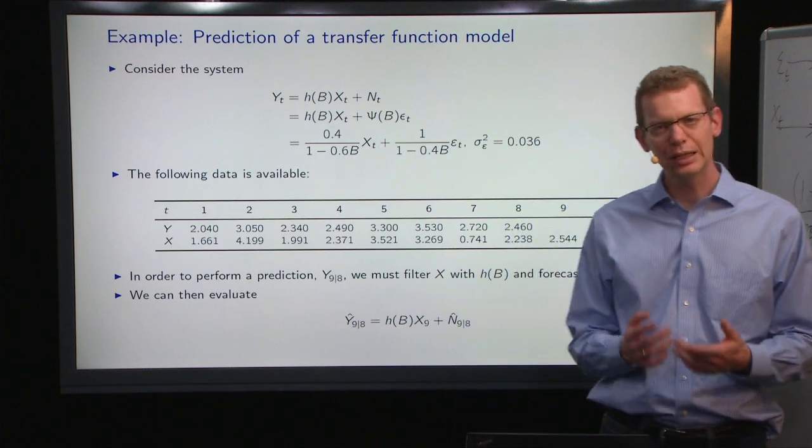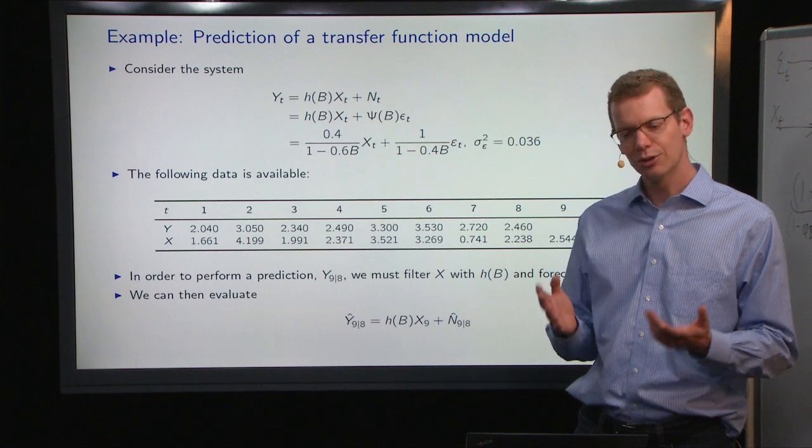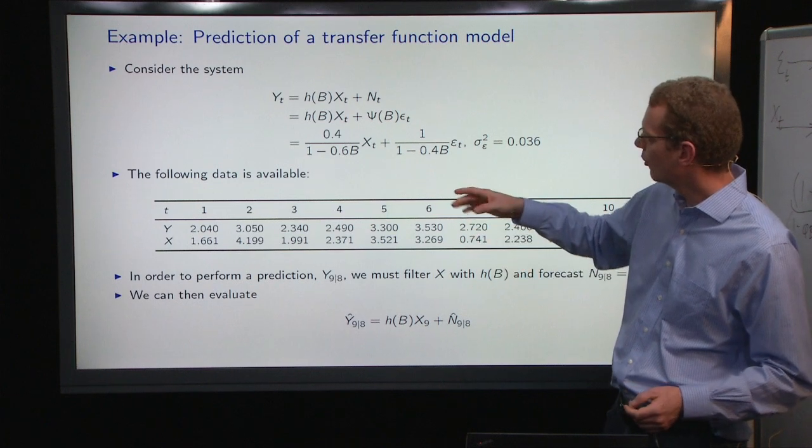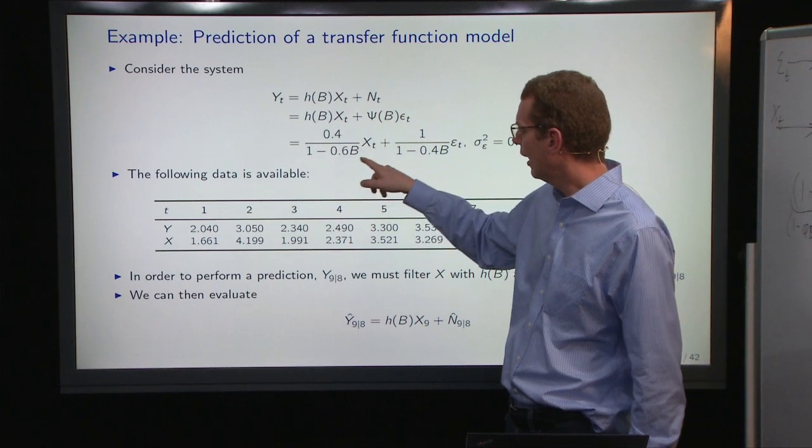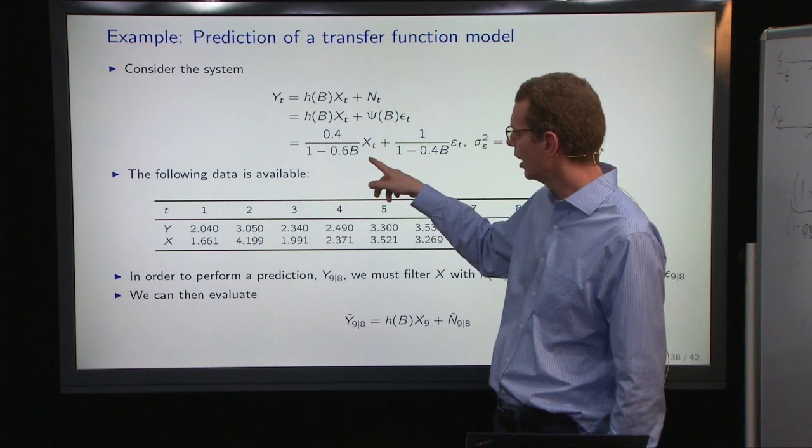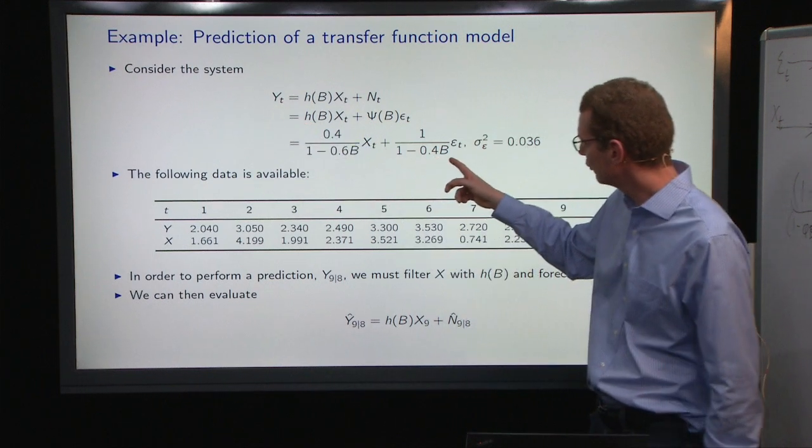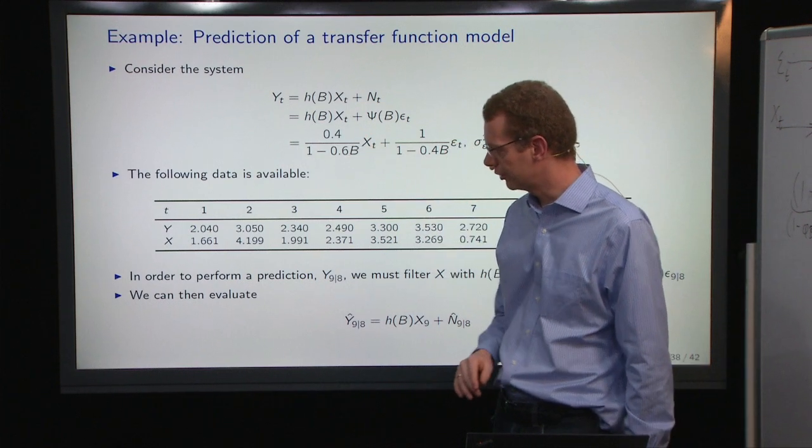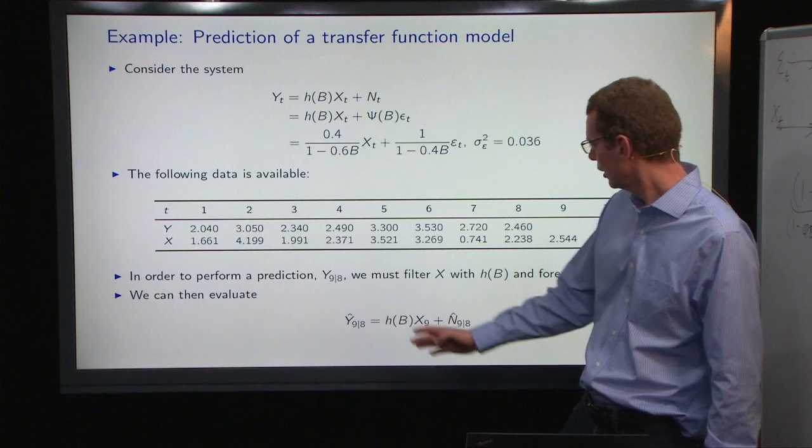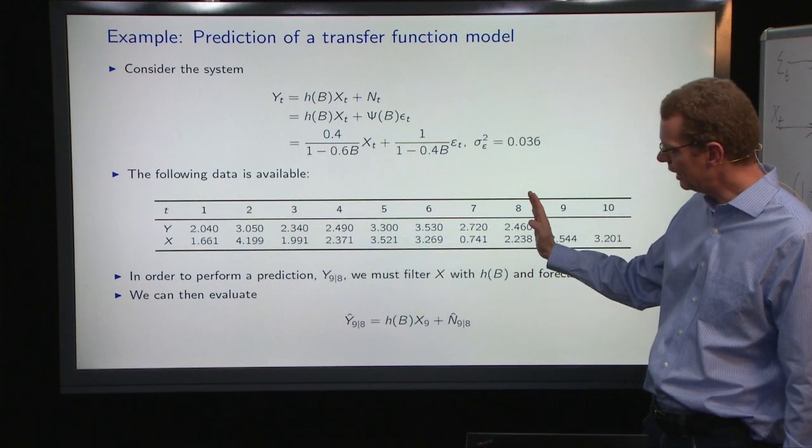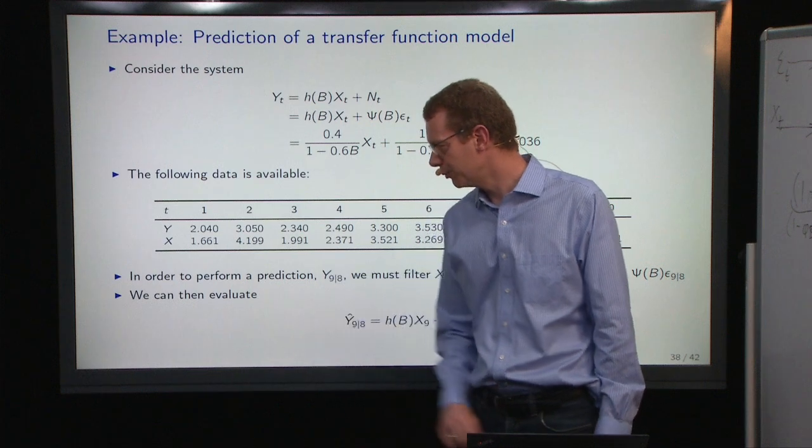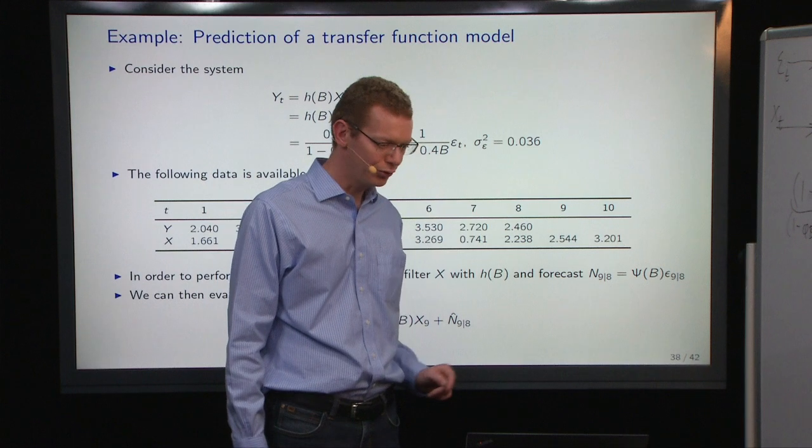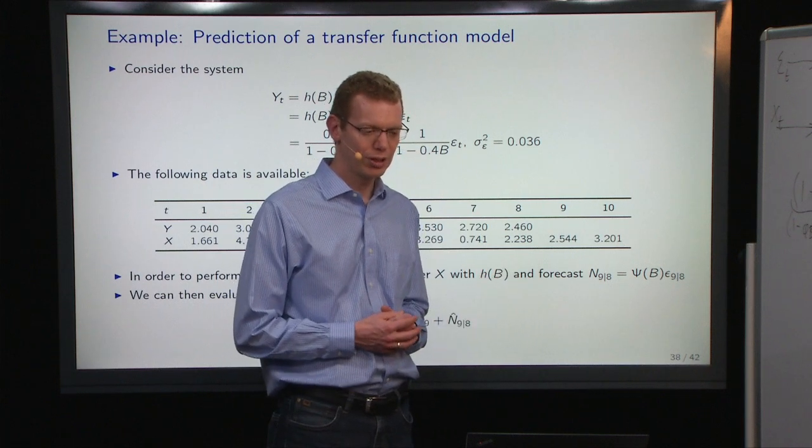So, that's doable. Let's just make, to round off, let's go through a numerical example here with some small models. So, in this case, we have an AR-1 style model from the input to the output, and we have a different coefficient for the AR-1 model from the noise into the system. And what we have observed is up to time 8, we have observed both the output and the input. And in this case, we assume that we know the input out into the future. So, we are set to go.